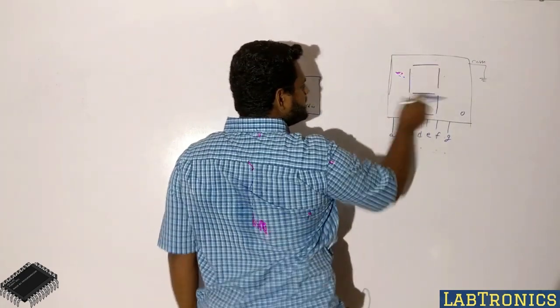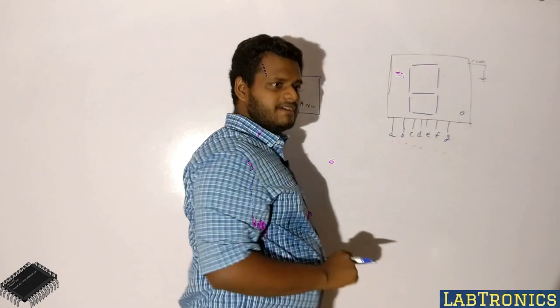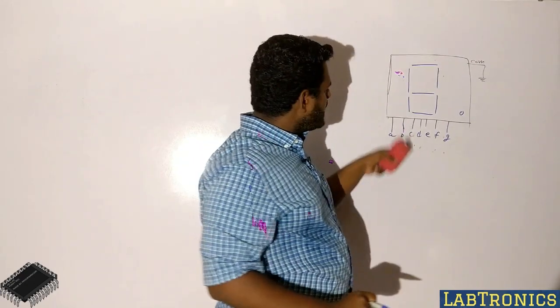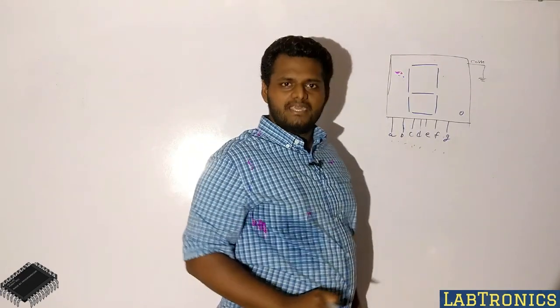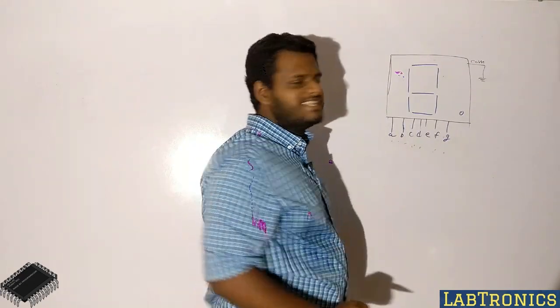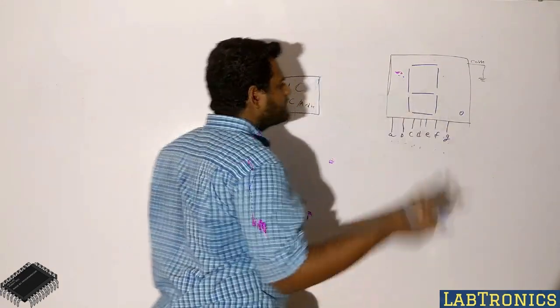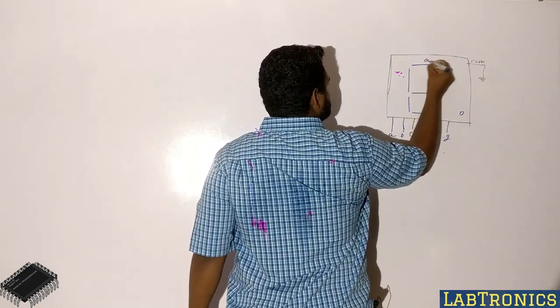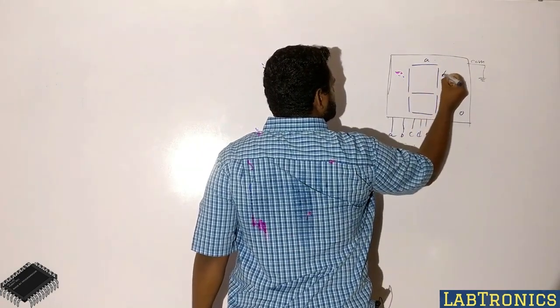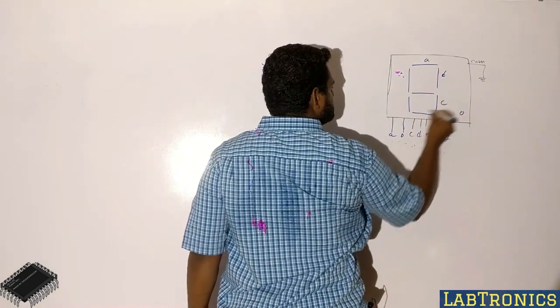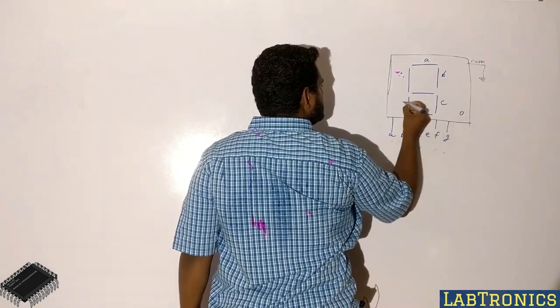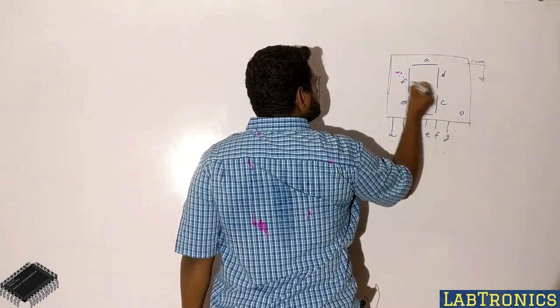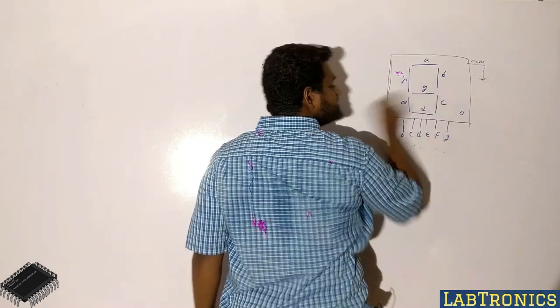The input of the 7-segment display will be connected to the input of the 7-segment. As you can see, you have A, B, C, D, E, F, and G.